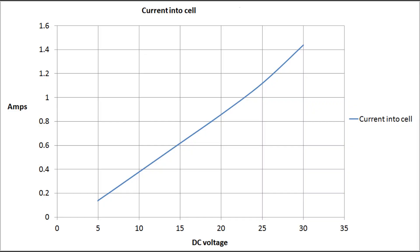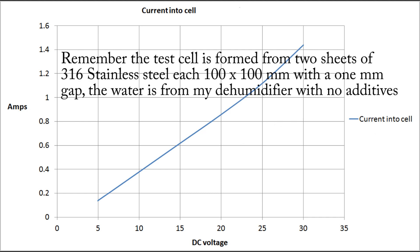Here's the next graph. At this stage you could be forgiven for saying that's boring — it's just another straight line — but bear with me. This one is headed 'Current into the Cell.' On the X axis across the bottom we've got our 5, 10, 15, 20, 25, 30 volts DC into the cell, and on the Y axis on the left-hand side we've got the current going from 0 to 1.6 amps.